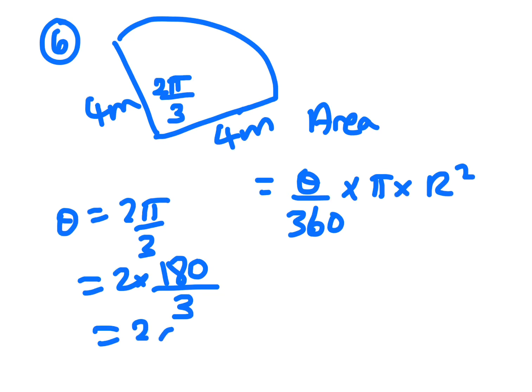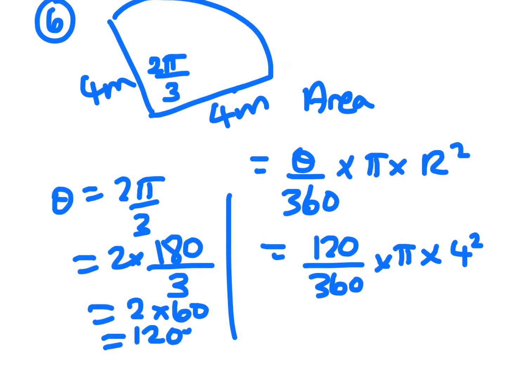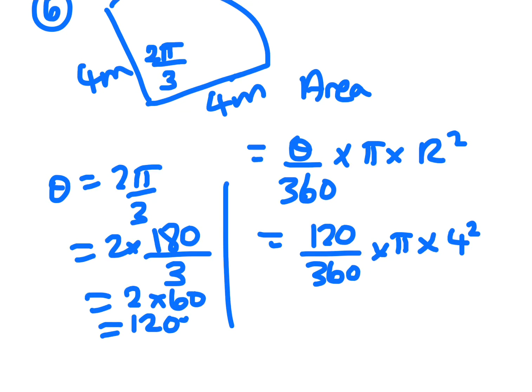So it's going to be 120 on 360 times pi times 4 squared. So you just work that out: 120 on 360 times shift pi times 4 squared, and you end up with 16.8 meters squared.